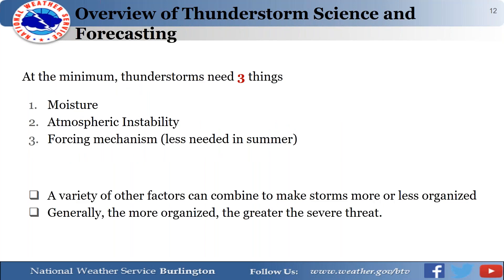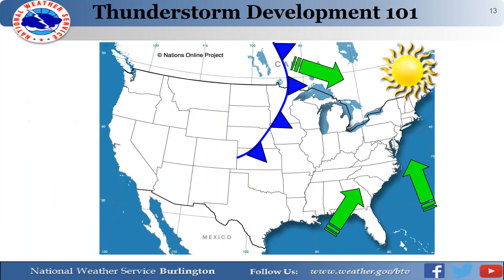At minimum, there are three ingredients needed to create thunderstorms. First, moisture — high humidity outside. Second, atmospheric instability — we get more unstable with warmer temperatures; CAPE, or Convective Available Potential Energy, is the instability we refer to. Third, forcing mechanisms such as a cold front, warm front, or even mountains can initiate thunderstorms. A variety of factors combine to make storms more or less organized, and generally the more organized a thunderstorm is, the greater the severe threat.